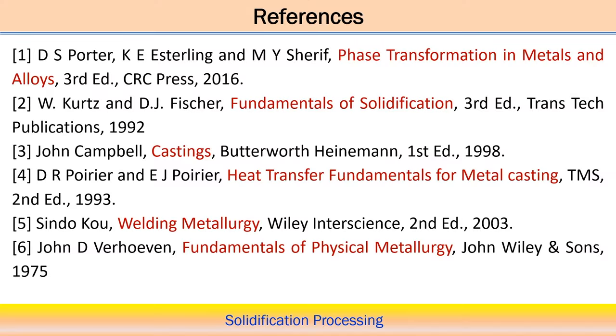The fifth reference is on Welding Metallurgy, covering different microstructural formation after solidification, welding solidification, and metallurgical aspects. The sixth reference book is Fundamentals of Physical Metallurgy, included because understanding physical metallurgy is required to understand the microstructure developed after solidification. All six textbooks or reference books are sufficient to cover this course content.